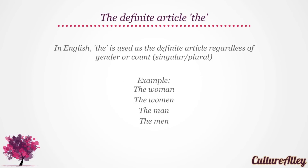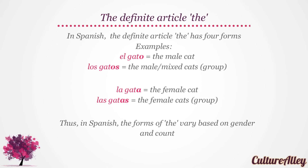In English, the is used as a definite article regardless of gender or count — singular or plural. For example, the woman, the women, the man, the men. In Spanish, however, the definite article the has four forms. El gato means the male cat, while los gatos means the male or mixed cats, referring to a group. La gata implies the female cat, while las gatas means the female cats, referring to a particular group of female cats. Thus, in Spanish, the forms of the definite article vary based on gender and count.